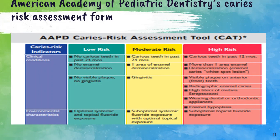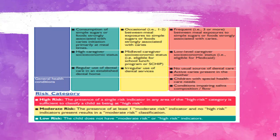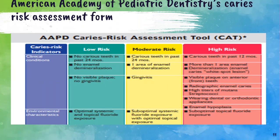The American Academy of Pediatric Dentistry has developed a caries risk assessment form as a risk assessment tool. It generally consists of clinical conditions and environmental characteristics. Clinical conditions include development of carious teeth within 12 to 24 months. When there is no development of caries in the past 24 months, no enamel demineralization, no visible plaque, and no gingivitis, the patient is categorized as a low risk group.